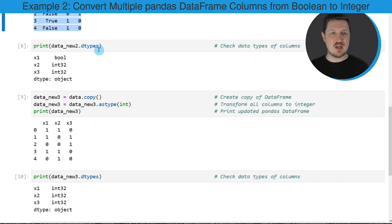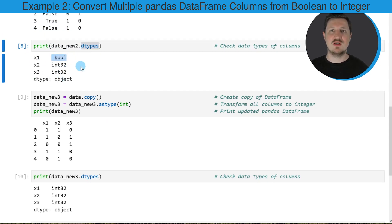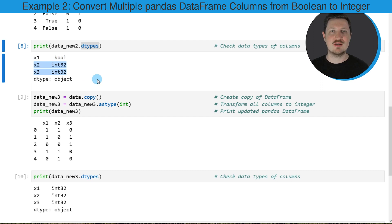Once again, we can check that using the dtypes attribute, as you can see in the eighth code box. Below this code box, you can see that the first column X1 still has the boolean data type, but the other two columns have been converted to the integer data type.